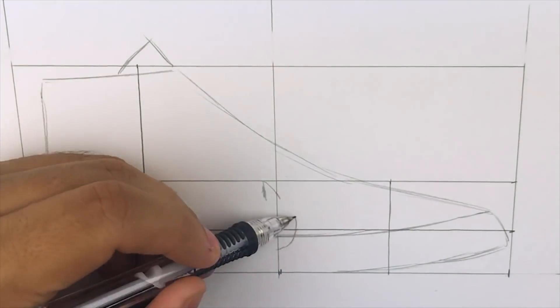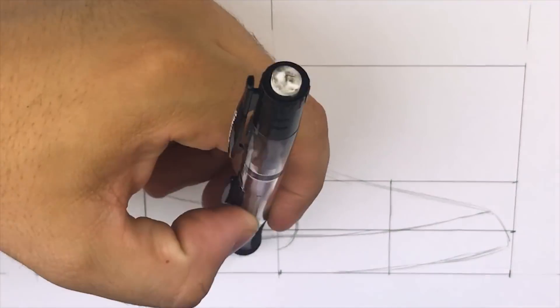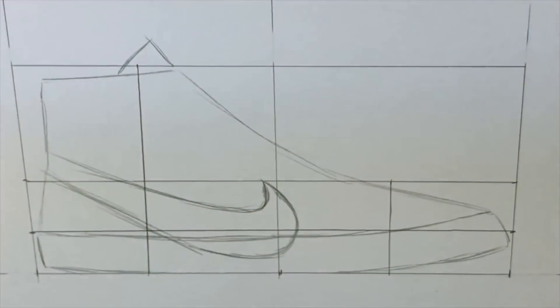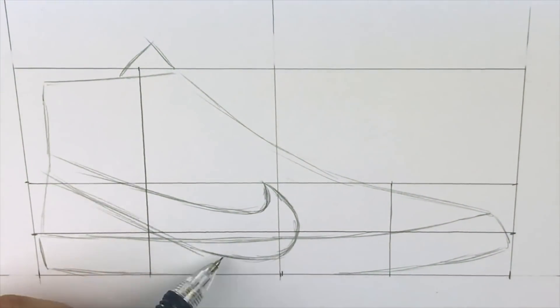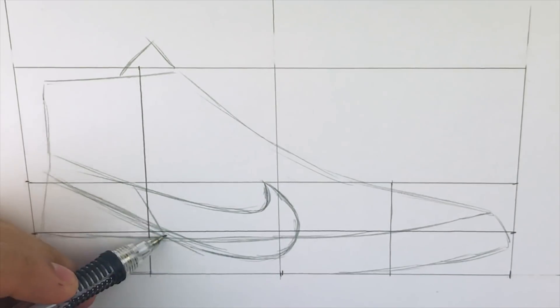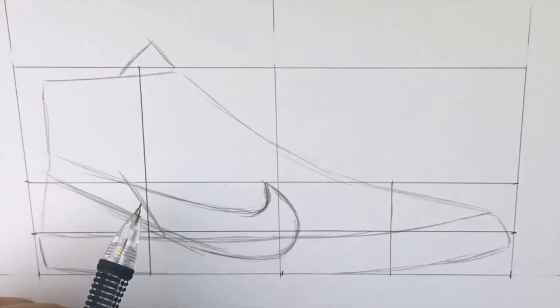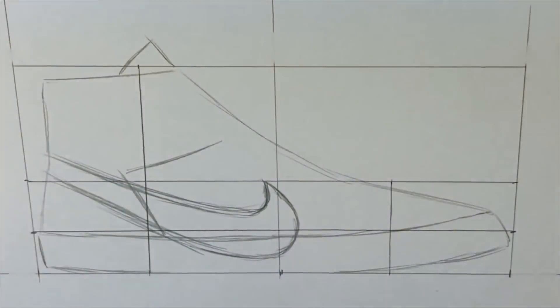Now I'm going to start working on defining the upper, and you're going to notice with the swoosh I go over it a few times to make sure it looks good. Again, you guys know what a Nike swoosh looks like. If it looks a little bit off, just keep working at it, and use that middle intersection for a good placement on where the end of the swoosh should be.